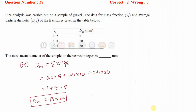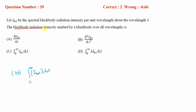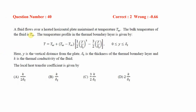To find the mass mean diameter, apply the formula: sum of (diameter × mass fraction) over all fractions, giving the final answer as 13 mm. For the next question on black body radiation intensity emitted over all wavelengths, this is a direct formula question and the correct option is C.